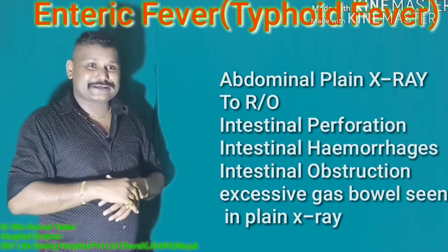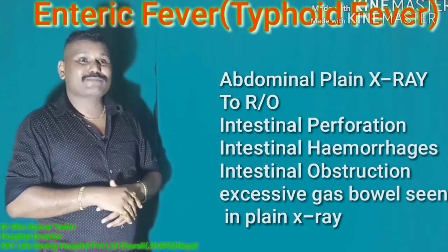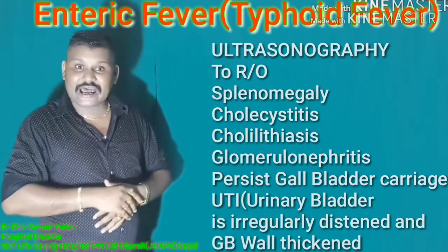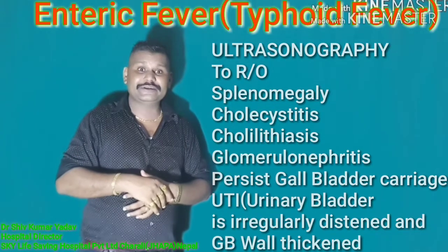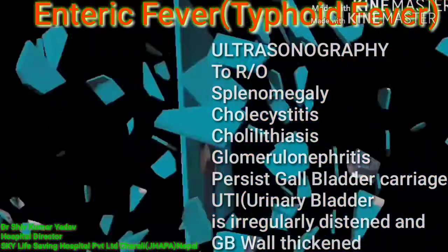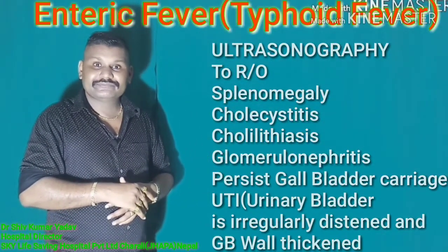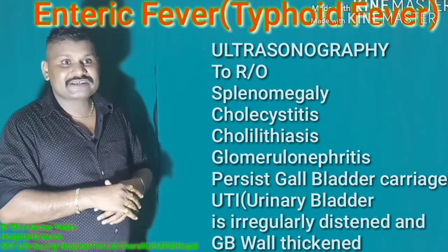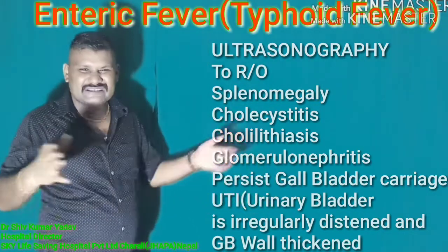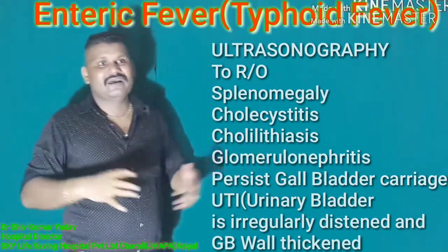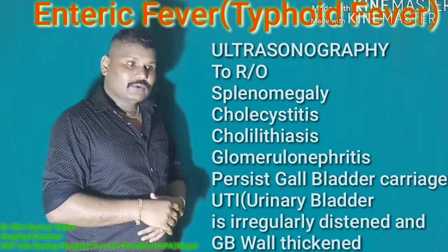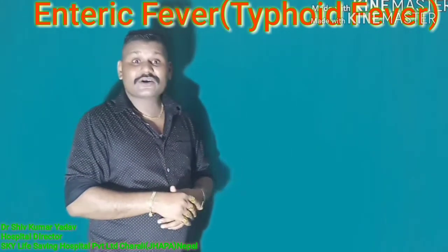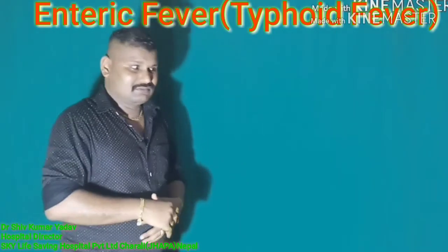For second stage complications, if intestinal perforation is suspected, we perform an abdominal plain X-ray in erect position to look for a gas bubble. We can perform ultrasonography to rule out gallbladder abnormality such as cholecystitis or cholelithiasis, splenomegaly, or liver abnormalities. We can do an echocardiogram to check whether the patient has myocarditis or not. Uric acid and RA factor can also be performed.